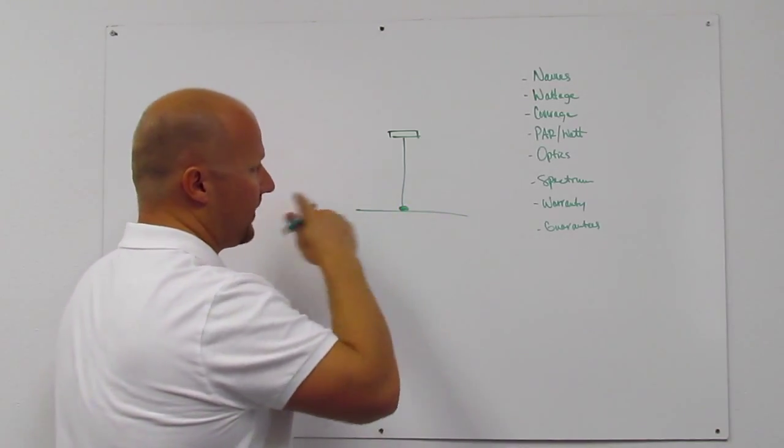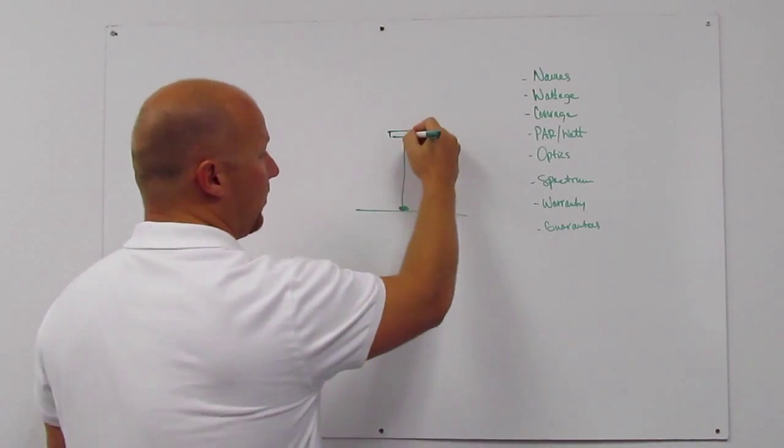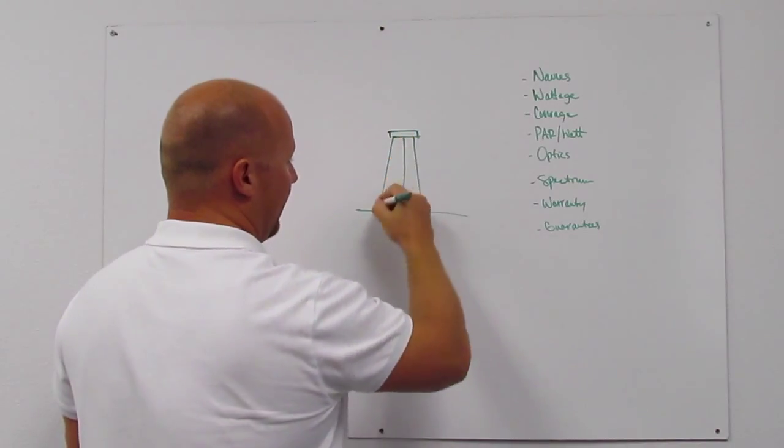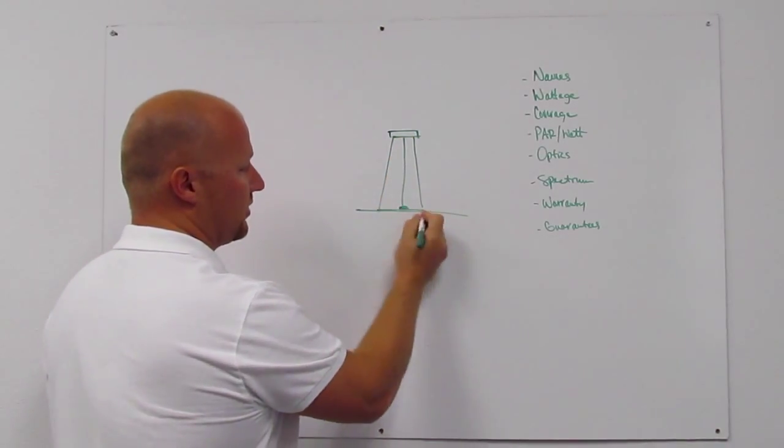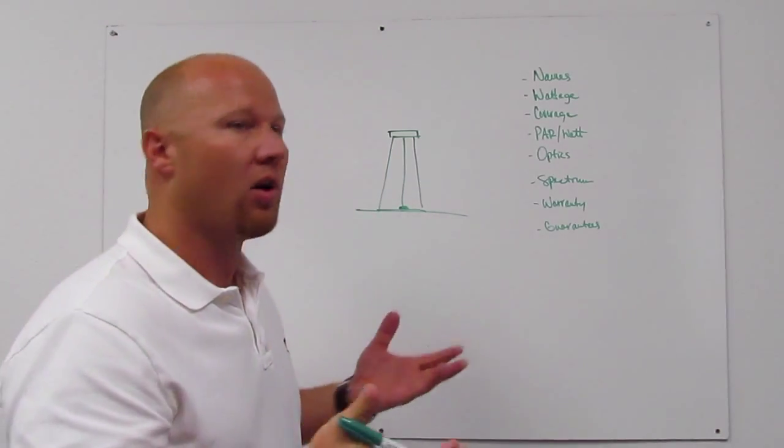The problem is anyone could get this number to 2,000 or 3,000 PAR if they wanted to. You could put a 45 degree optic and have three or four or 500 watts just come straight down here and cover a one foot by one foot space and have crazy PAR numbers.